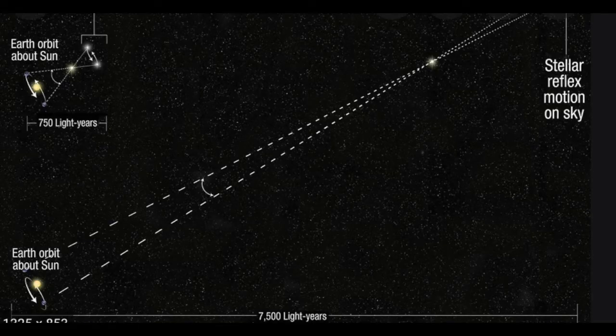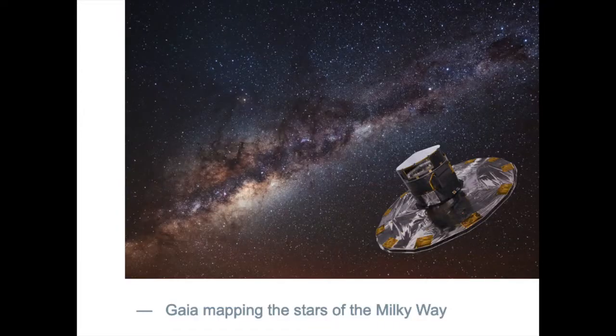It turns out that the parallax angle is very small — less than one arc second. What is an arc second? There are 360 degrees in a compass. One degree can be broken down into 60 arc minutes, and each arc minute can be broken down into 60 arc seconds. So one arc second is one 3,600th of a degree. That's really small — it's the size of a quarter as seen from five kilometers away. But with really good telescopes, especially ones in space, astronomers can measure those parallax angles.